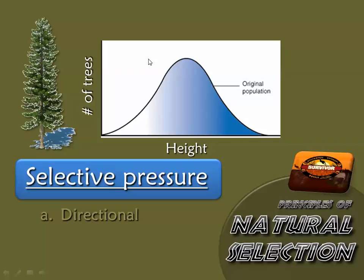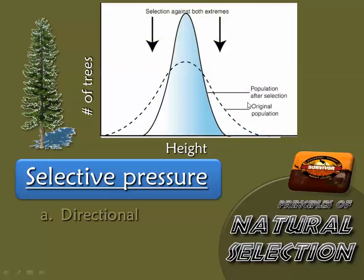Instead of pressing just on one side of our carpet bump, we're now pressing on both sides. You don't want to be too short, and you don't want to be too tall as a tree. What happens when you press on both sides at the same time? You end up with selection against the extremes, meaning your population stabilizes and becomes even more homogenous — very, very similar to the other members of the species. This is what we call stabilizing pressure, because it makes the population more stable, with the ones in the center having much greater likelihood of survival.